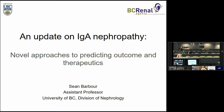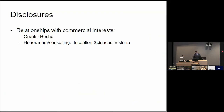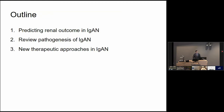Today I'm going to talk about novel approaches to predicting outcome and novel therapeutics in IgA nephropathy. These are my disclosures — I'll come back to some industry relationships later when we talk about clinical trials. First we're going to talk about predicting renal outcome in IgA nephropathy, then take a brief review of pathogenesis, and then try to tie that into novel therapeutic approaches with targeted treatments for IgA.